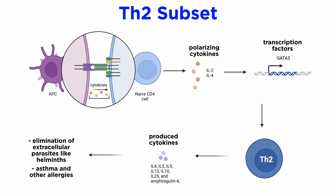For Th2 differentiation, the key players are cytokines IL-4 and IL-2, and the major transcription factor GATA binding protein 3, GATA-3. Th2 cells mount immune response to extracellular parasites, including helminths, and play a major role in induction and persistence of asthma, as well as other allergy-related diseases. The key effector cytokines are IL-4, IL-5, IL-9, IL-13, IL-10, IL-25, and amphiregulin.